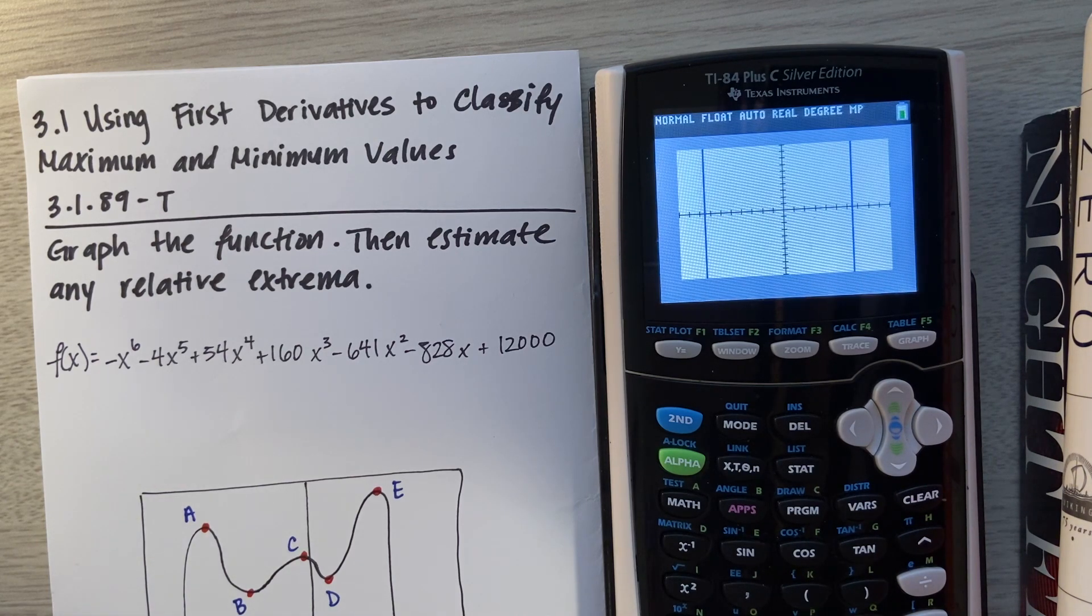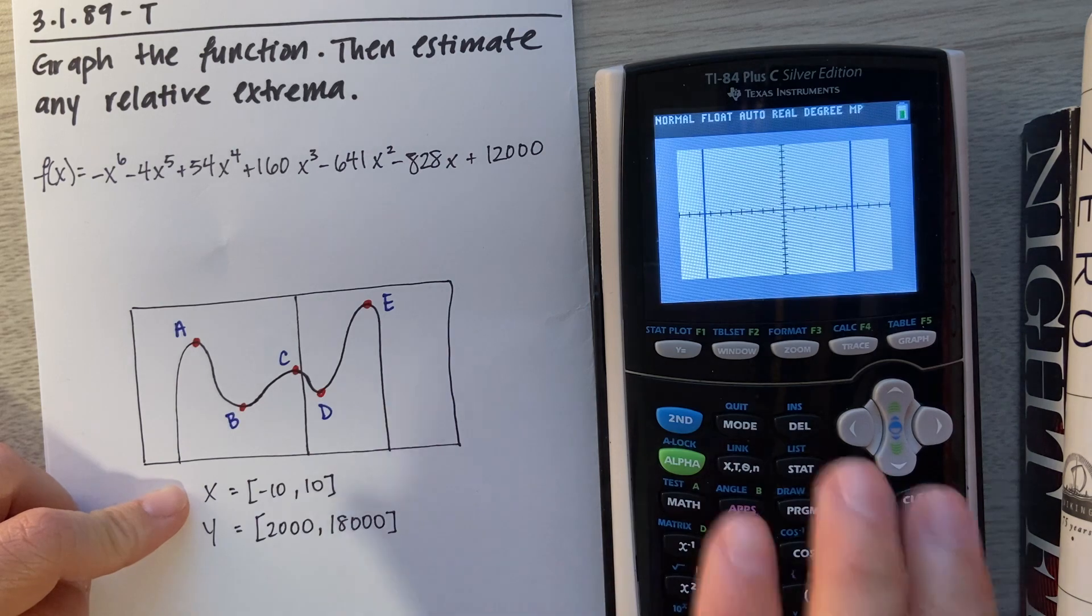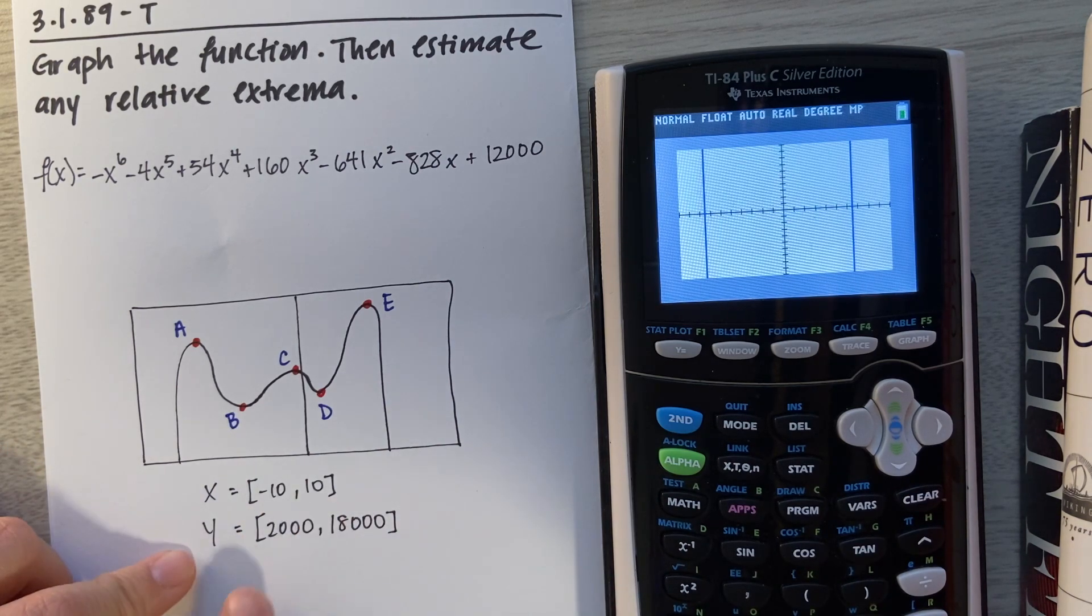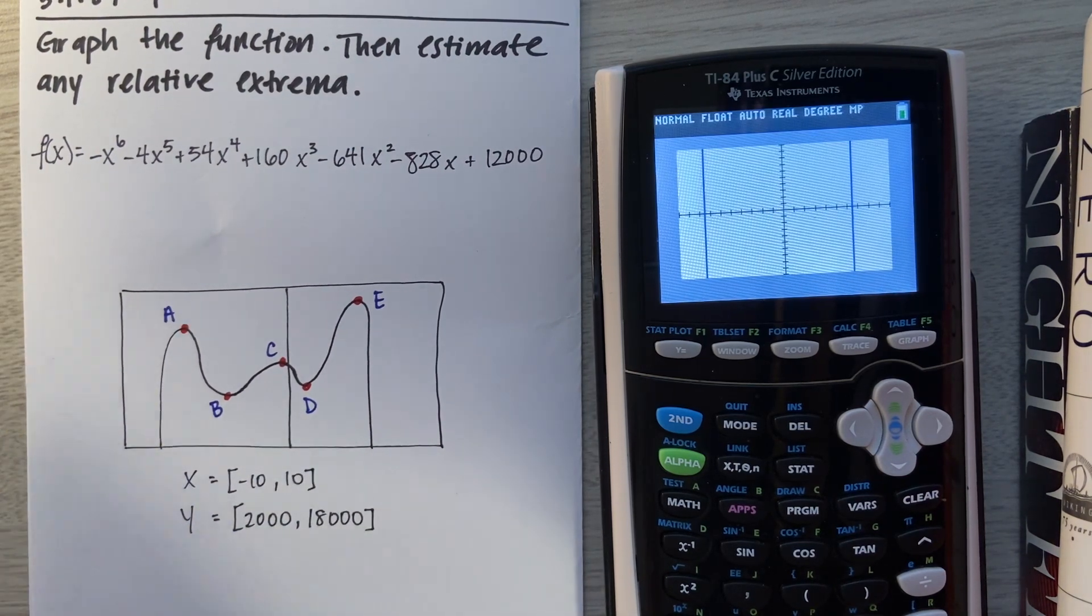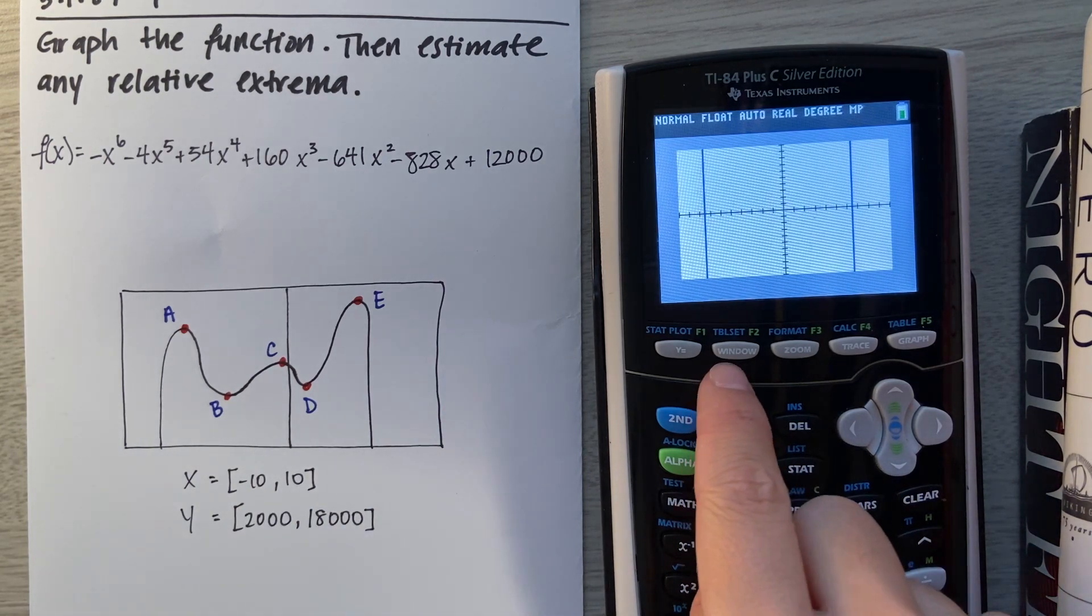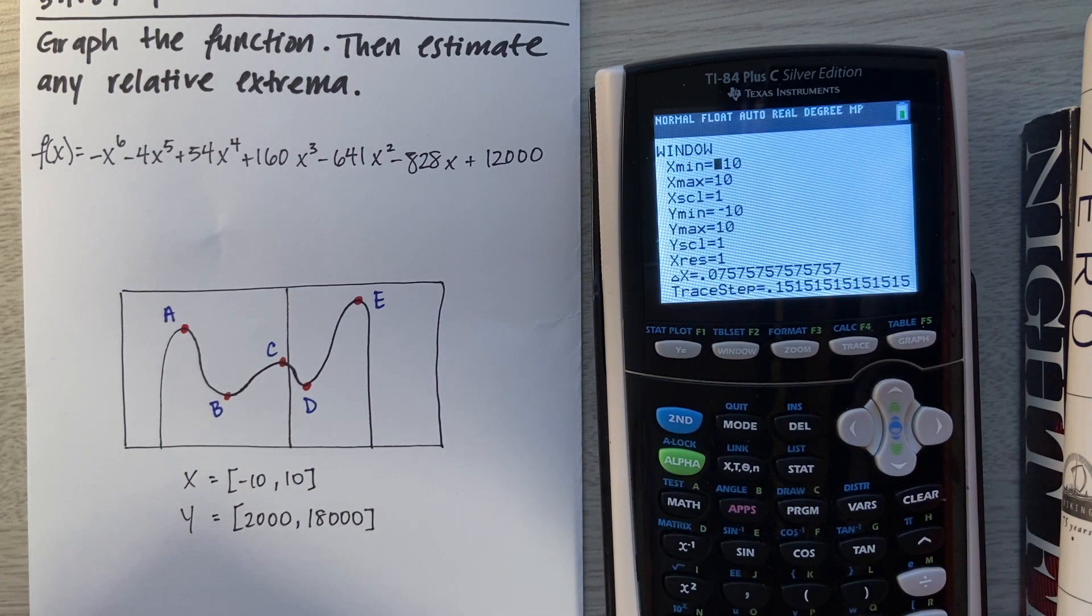That tells me our window is not correct. What I did is I looked at the different options that the question had, and I figured out that option C had the best window to use. Option C had these constraints: X was between -10 and 10, and Y between 2,000 and 18,000. Now we're going to learn how to adjust the window. At the very top next to Y equals is a button called Window. We're going to click on that, and then insert these values so we can see some mins and maxes.